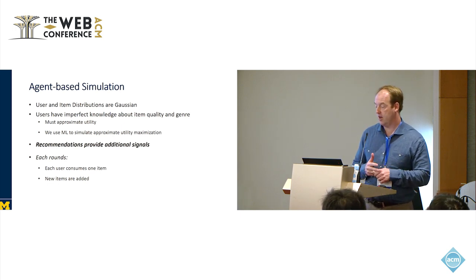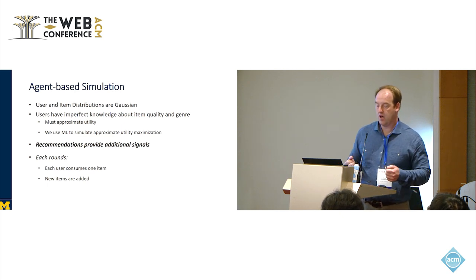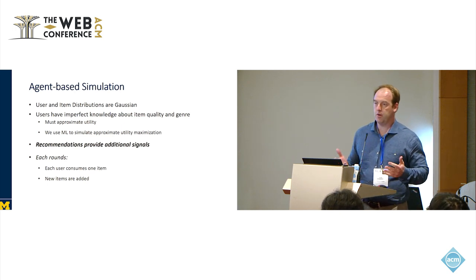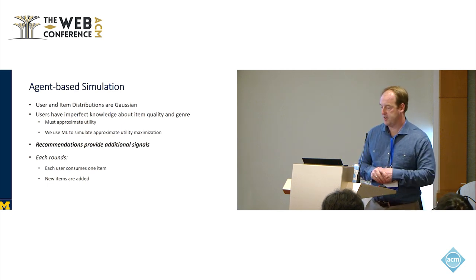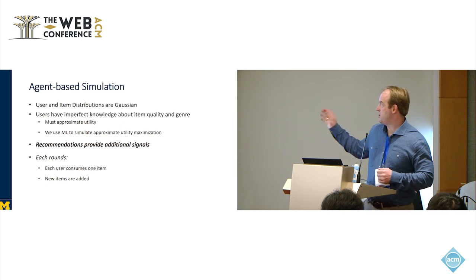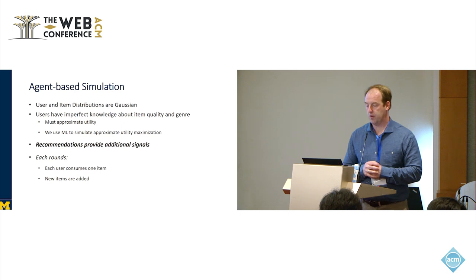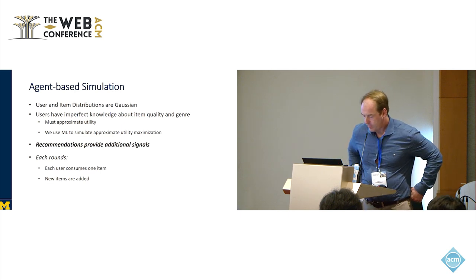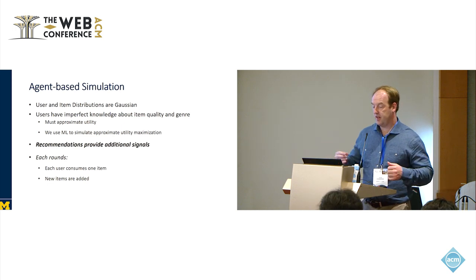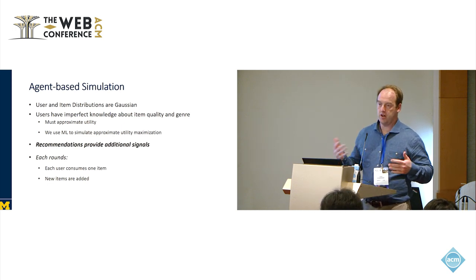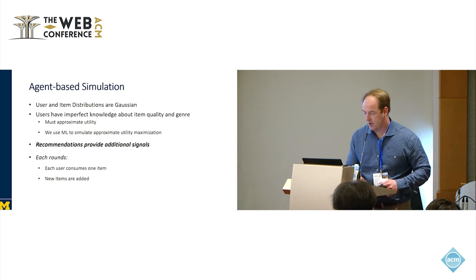They're going to approximate their utility. They'll try to optimize their utility, but they won't be able to do it perfectly. We're going to simulate what the users are doing using machine learning. They're doing something reasonable to select items that maximize their utility. But they also have recommendations provided to them, so they have their own signals and perhaps a signal from a recommendation. In each round, they see the recommendations and consume one item. At every round, some new items are added so it's not completely static. That's the setup of the agent-based model.